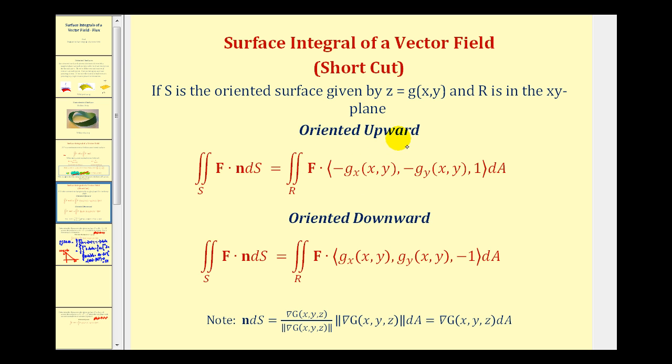Notice that the orientation is upward. We take the opposite of the partial derivatives of g with respect to x and y, and the z component is positive one. And if the orientation is downward, we take the partial of g with respect to x, the partial of g with respect to y, and then the z component would be negative one.